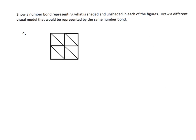This is the same problem but a different geometric figure. I included this one because I thought it was kind of sneaky, kind of tricky. It says, draw a number bond for what is shaded and unshaded. Our number bond is going to begin with the number one, and we can see there are one, two, three, four, five, six, seven, eight pieces total.